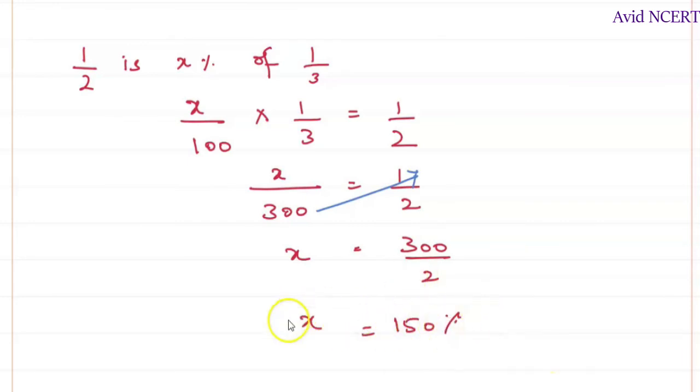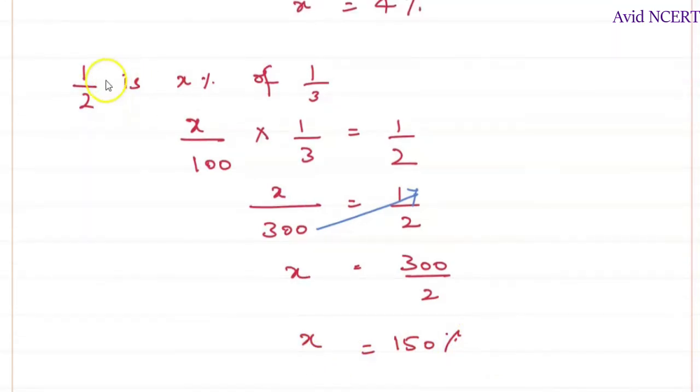So x is 150 percent here. So 1 by 2 is 150 percent of 1 by 3.